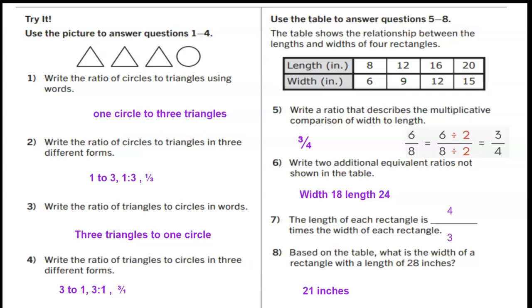Remember, both 21 over 28 can be simplified by dividing by 7, which gives us 3 fourths. This concludes this video. Please watch part 2 and then complete the pre-assessment. Thank you.